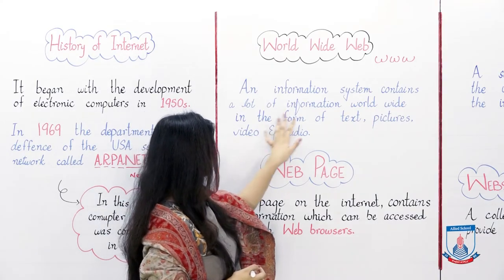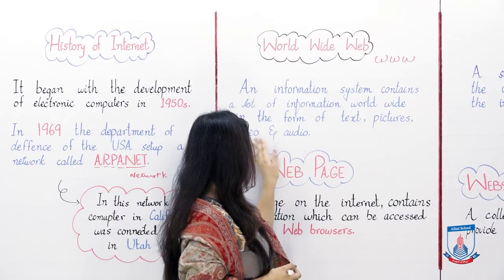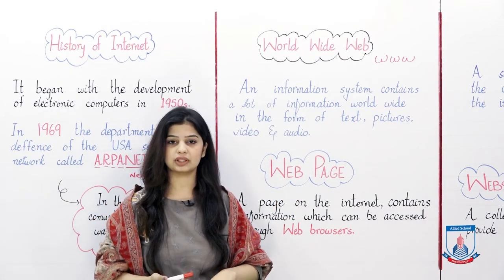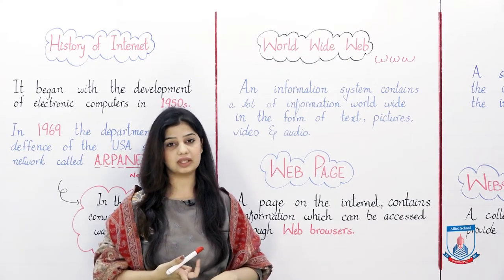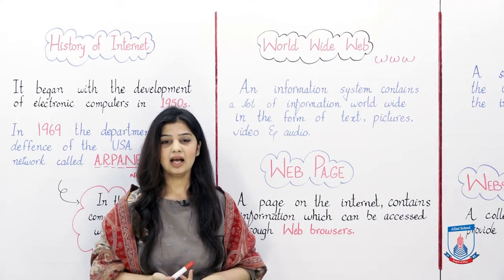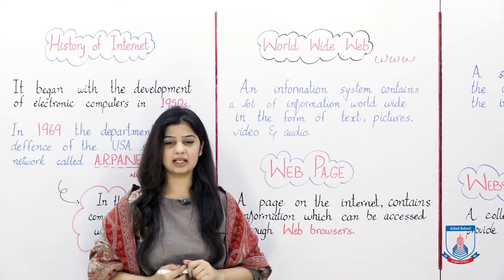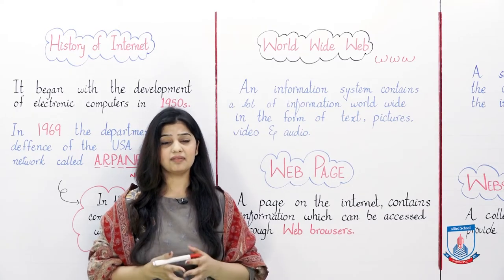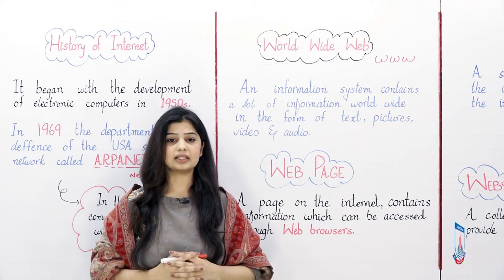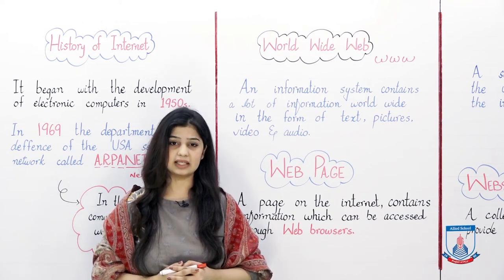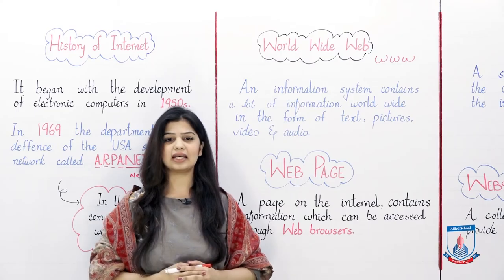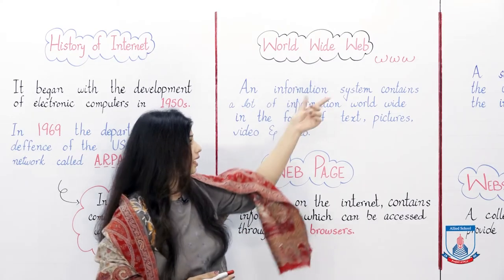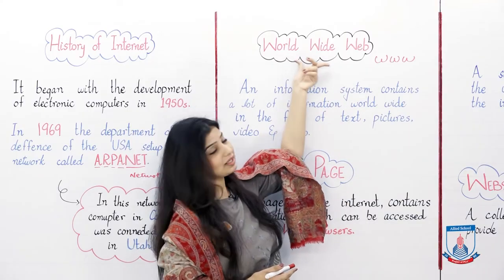On the World Wide Web, we can get all kinds of information in the form of text, pictures, videos, and audios. All this information — text, pictures, video files, and audio files — is saved in the WWW, or World Wide Web.